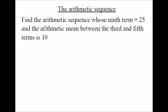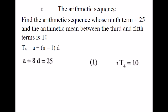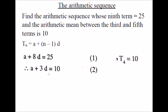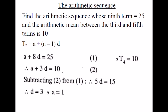Example: find the arithmetic sequence whose 9th term is 25 and the arithmetic mean between the 3rd and 5th term is 10. T9 equals A plus 8D, which equals 25 — this is the first equation. The arithmetic mean between the 3rd and 5th terms: there is only one term between them, which is T4, and it equals 10. T4 is A plus 3D, equals 10 — the second equation. Subtract the two equations: 5D equals 15, so D equals 3. Substitute D equals 3 into equation 1: A equals 1.